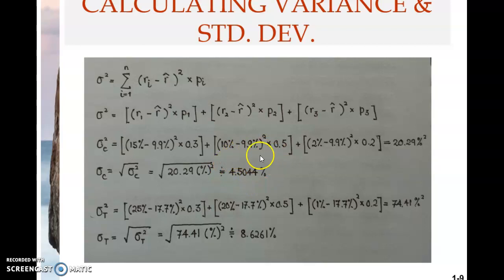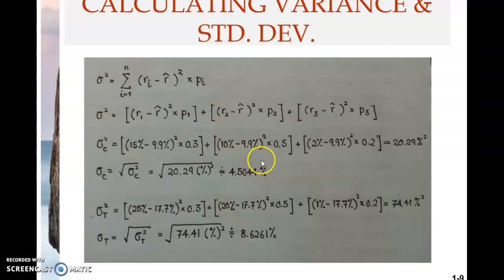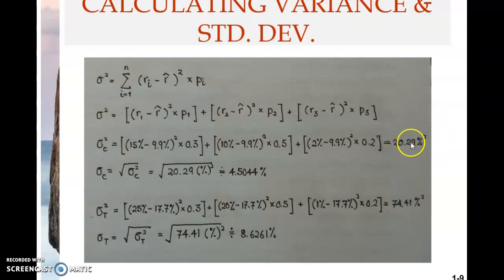Now this is an index. Remember, you can use variance also as a measure of risk, but standard deviation may be a better measure of risk because the measure is in percentage, which is similar to or in line with the measure for expected return. Expected return is also in percentage, so you can compare them side by side. If you use variance, this is percentage squared, so you can't compare that side by side with the expected return. Higher the variance, higher the standard deviation, and vice versa.